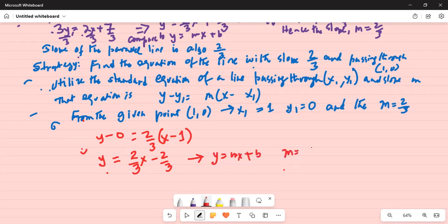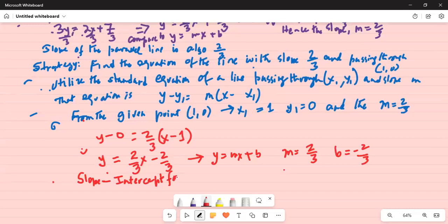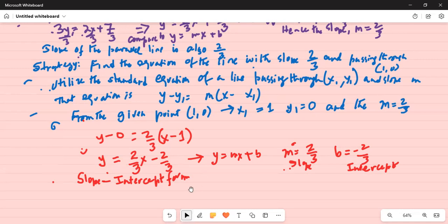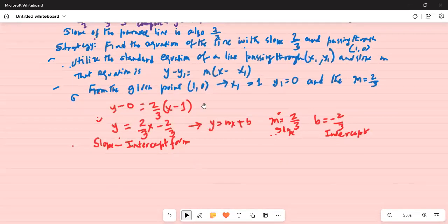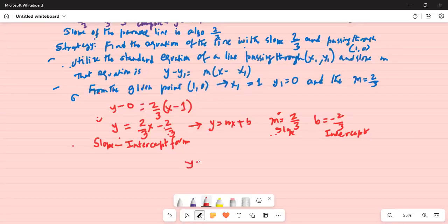This is the slope-intercept form that we were looking for. The slope is 2/3 and the intercept is -2/3. The answer is y=(2/3)x-2/3.